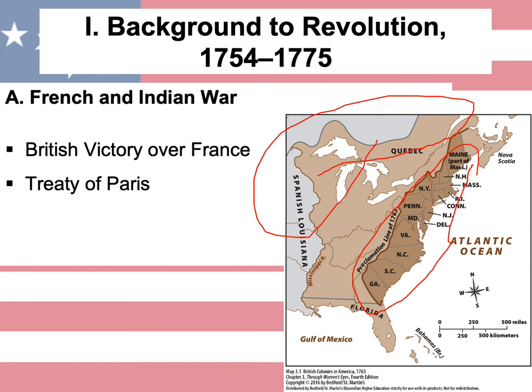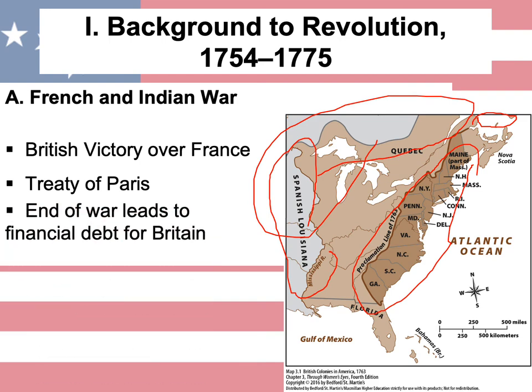France only received this little semi-enclosed circle of sea, which led to the Atlantic, known as the Gulf of St. Lawrence, essentially in the region north of Nova Scotia. That's all that they retained. Just for clarification, the Spanish were also involved on the side of the French as allies, and they received everything west of the Mississippi.